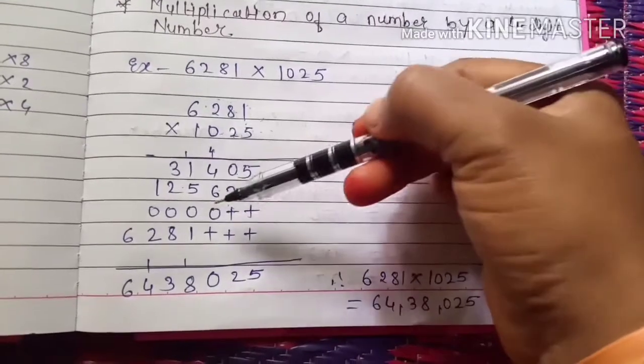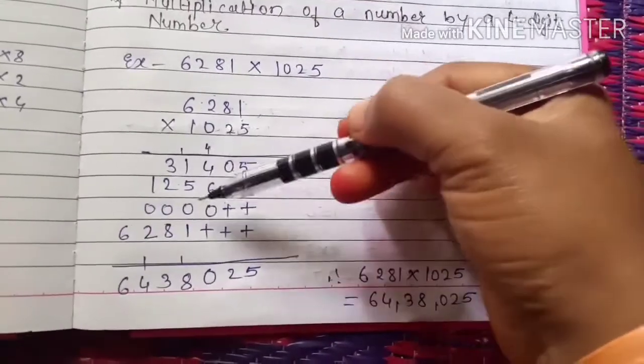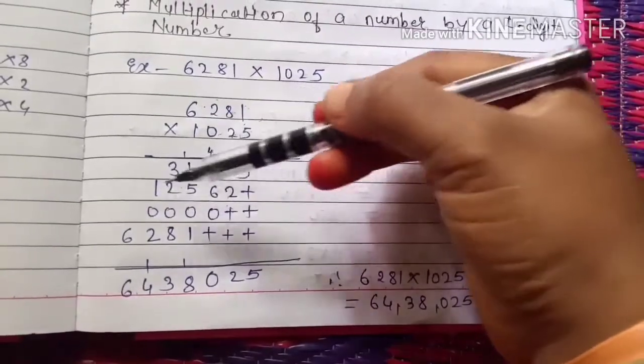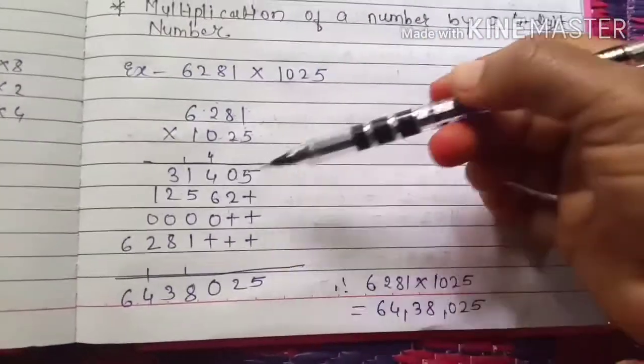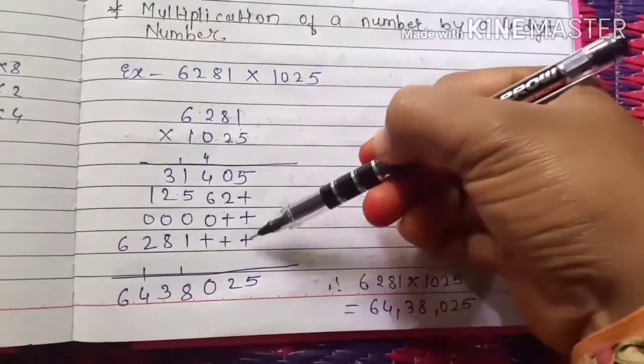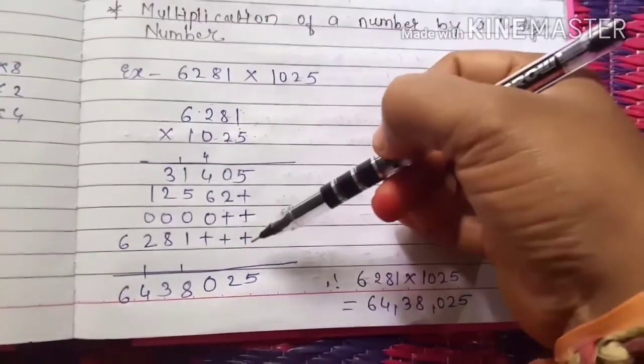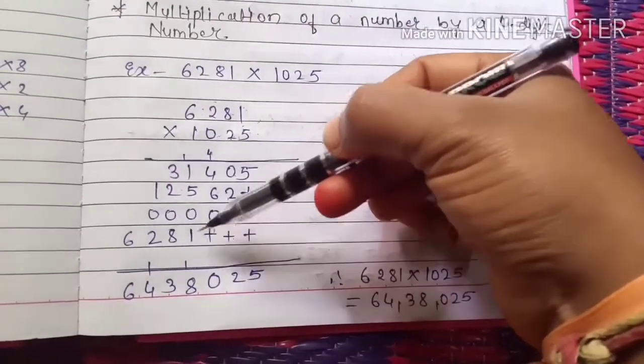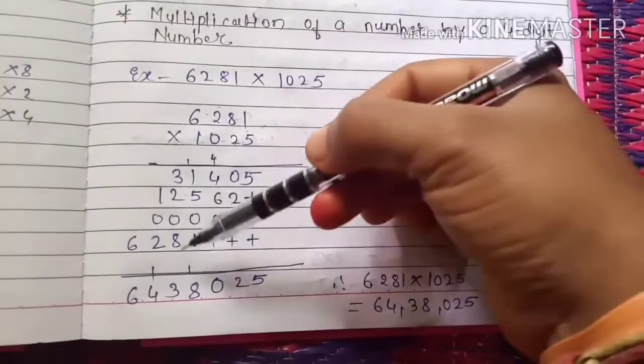So 0 into 1 is 0, 0 into 8 is 0, 0 into 2 is 0, 0 into 6 is 0. Then see here, the four-digit number has come. Then go to downside, put three plus signs because we have completed the ones multiplication, tens as well as the hundreds. So 1 into 1 is 1, 1 into 8 is 8, 1 into 2 is 2, and 1 into 6 is 6.